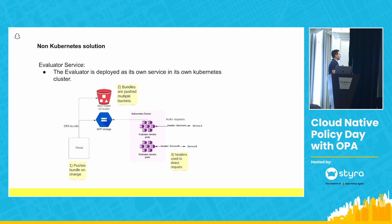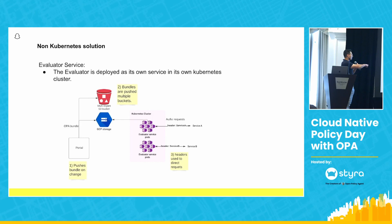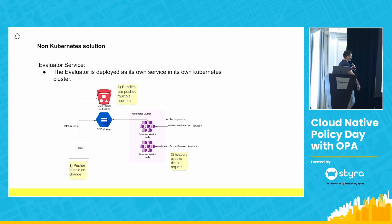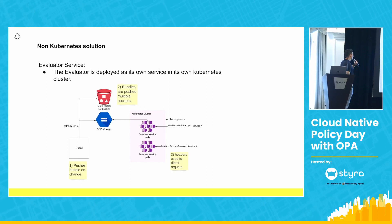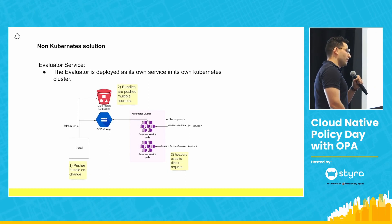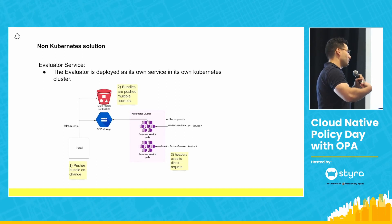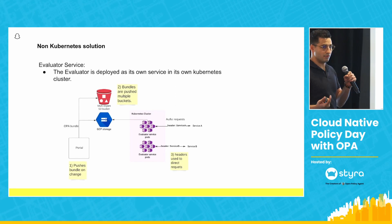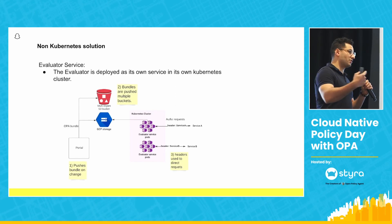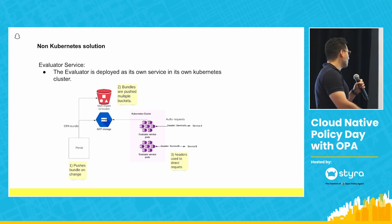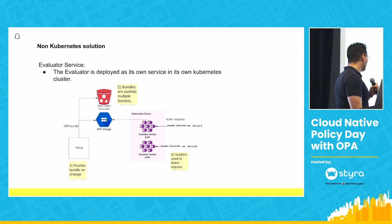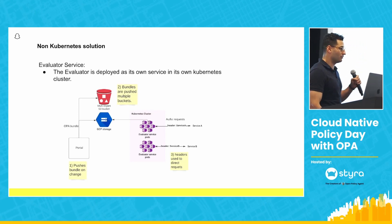For the non-Kubernetes solution, as I mentioned earlier, the evaluator service is deployed to the Kubernetes cluster. We push OPA bundles whenever there are changes to S3 buckets and GCP storage, and they get pulled in by the evaluator service. The end services self-identify using headers, and our internal infrastructure directs them to the right pods. This way we can service all services that are not in Kubernetes, though you do have to sacrifice some latency to achieve that.